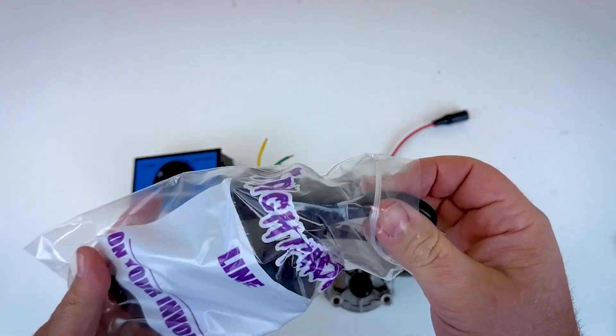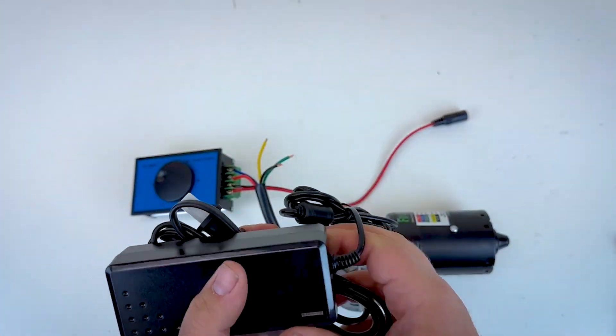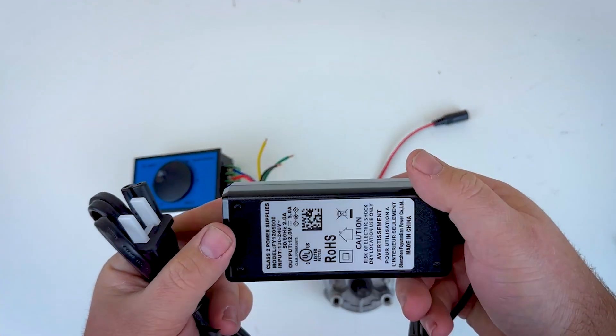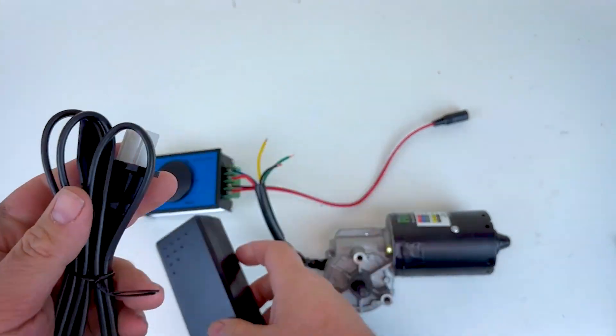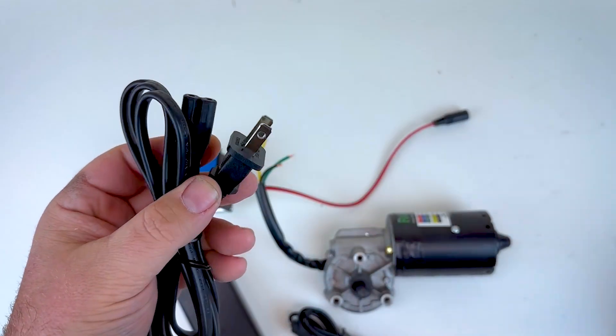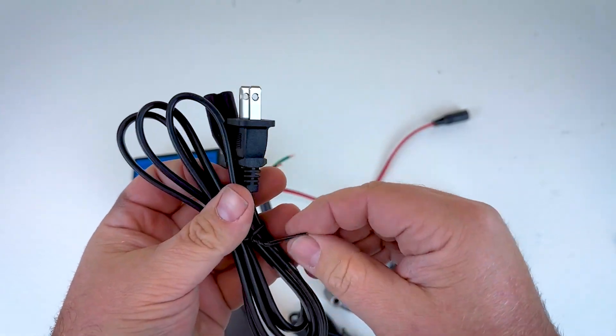All right and then lastly we can go ahead and open up our power supply here. Again this is a 12 volt 5 amp power supply. We'll go ahead and take the plastic protector off the cord. We can take off the twist tie.